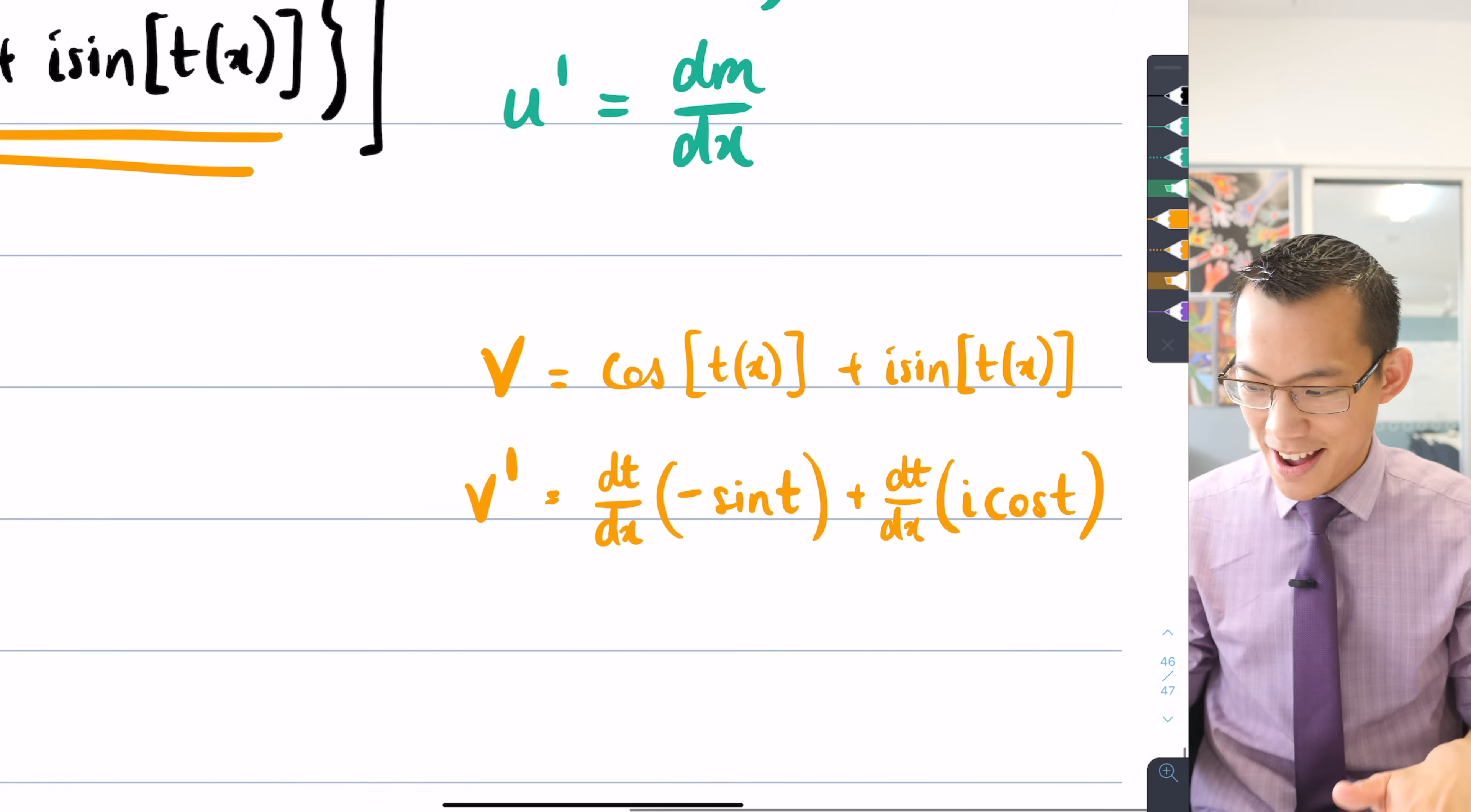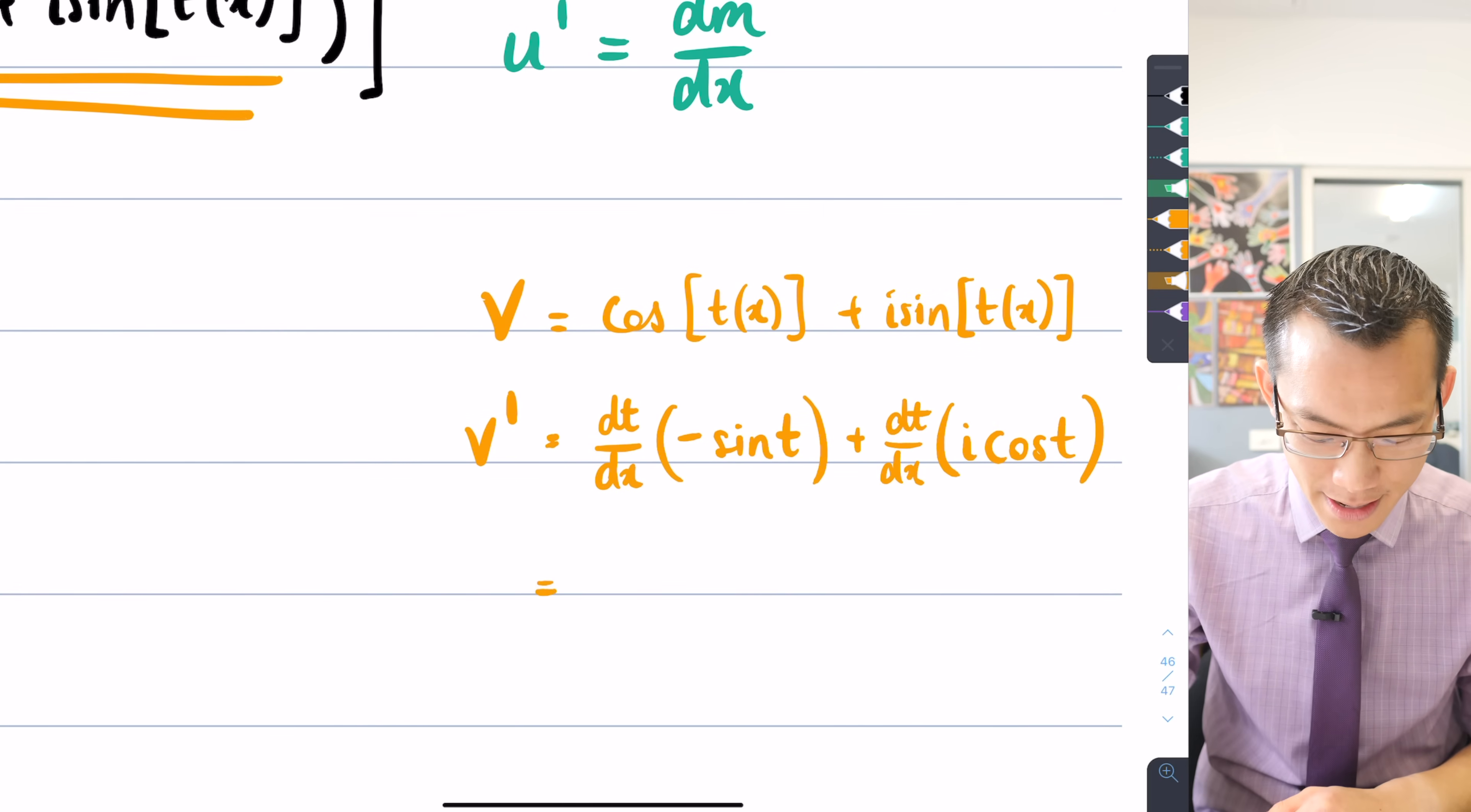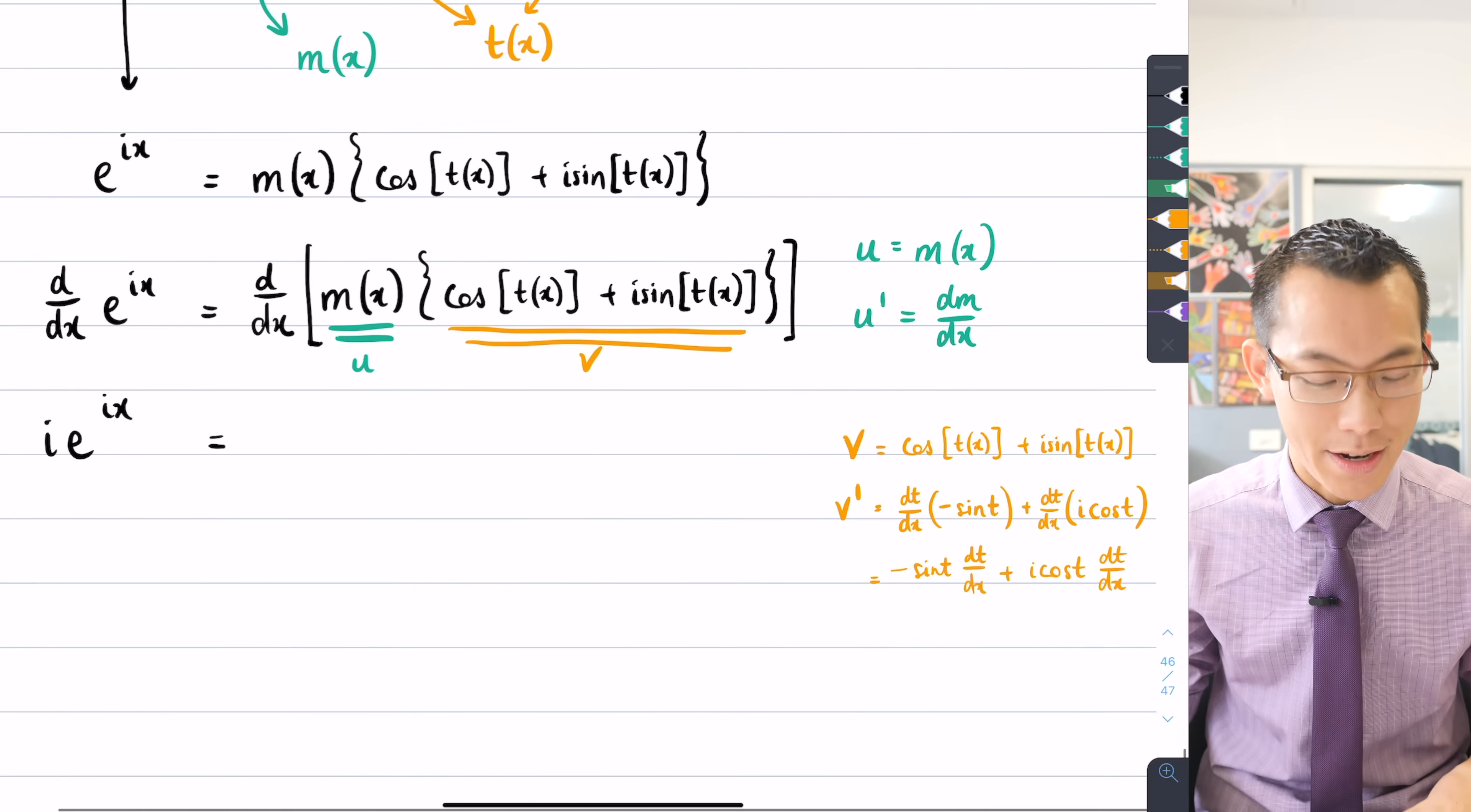Okay, so what have we just done? You've got two uses of the chain rule within our use of a product rule. Okay, so yes, that is a bit messy. We could tidy up a teeny tiny bit. I'll go minus sine t dt/dx plus i cos t dt/dx. Alright, at last, we've got v'. So now I'm going to be doing my product rule. I've got my u, my u', my v, my v'.